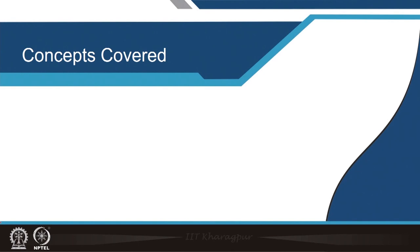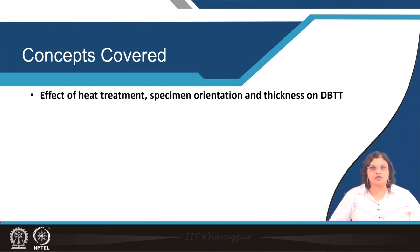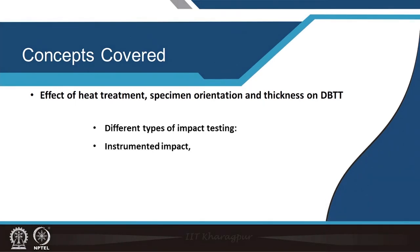Particularly in the last class, we were discussing about the importance of different metallurgical factors that are controlling the ductile to brittle transition behavior and the DBTT. In this lecture, we will be talking about heat treatment as well as specimen orientation and thickness on the effect of DBTT. After that, we will be talking about some other types of impact toughness testing rather than the Charpy impact test, and we will discuss the instrumented way by which impact toughness can be determined.